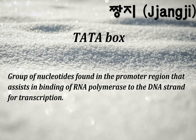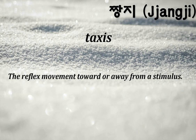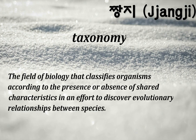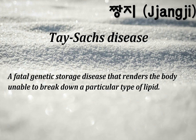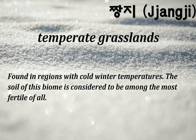Taproot system: system of roots found in many dicots that starts as one thick root and divides into many smaller lateral roots, which serve as an anchor for the plant. TATA box: group of nucleotides found in the promoter region that assists in binding of RNA polymerase to the DNA strand for transcription. Taxes: the reflex movement toward or away from a stimulus. Taxonomy: the field of biology that classifies organisms according to the presence or absence of shared characteristics in an effort to discover evolutionary relationships between species. Tay-Sachs disease: a fatal genetic storage disease that renders the body unable to break down a particular type of lipid. Temperate grasslands.